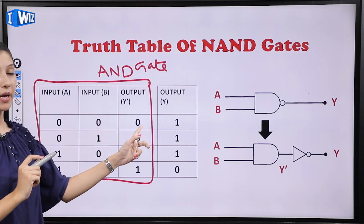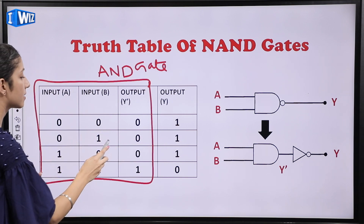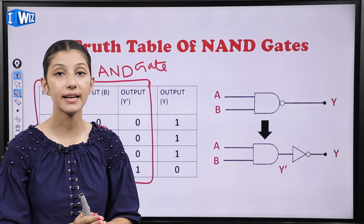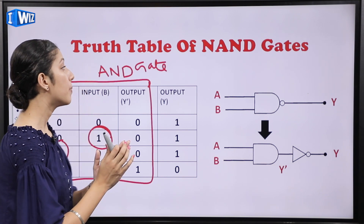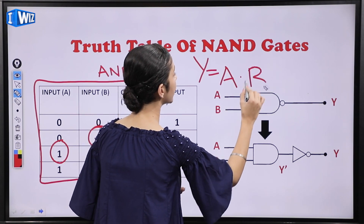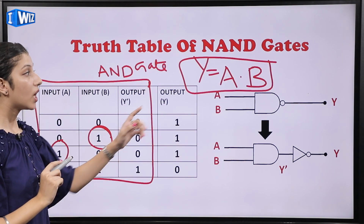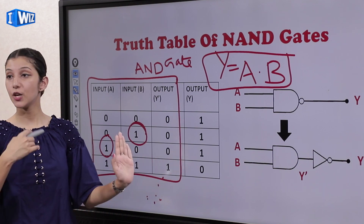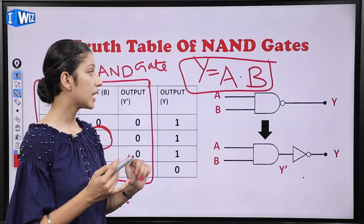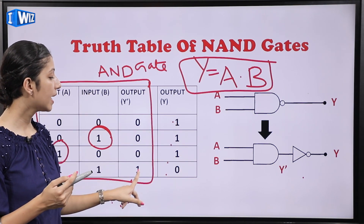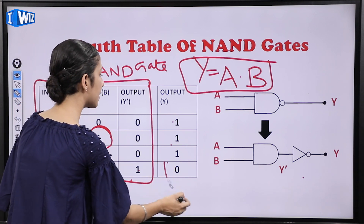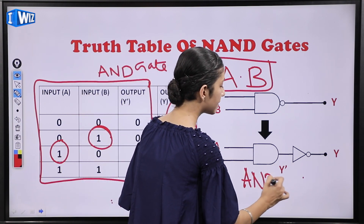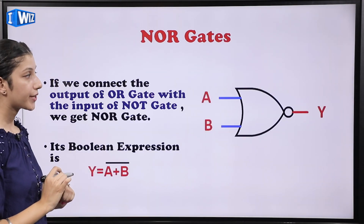In AND gate's truth table: when both inputs are 0, output is 0; if one is high, output is still 0; only when both are 1 does AND give output 1. When this output is passed through NOT gate, it gets inverted: 0→1, 0→1, 0→1, 1→0. This is the truth table of NAND gate — the combination of AND plus NOT.